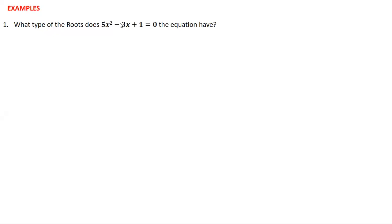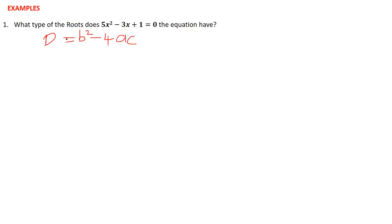The first question is telling us to find the kind of roots that this equation has. To know what kind of roots the given equation has, you need to use the discriminant. The discriminant is given by b squared minus 4ac.